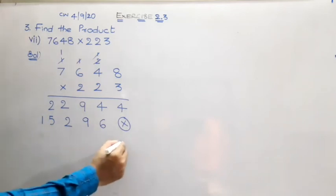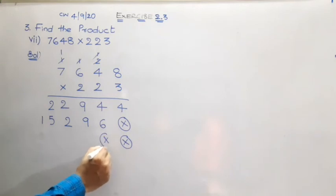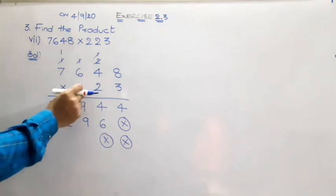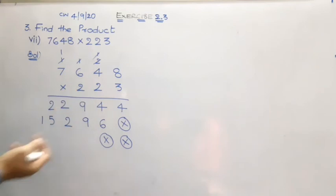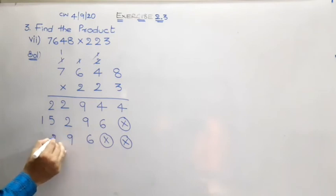For the next number, we again have to leave two place values. Here we have the advantage that again we have to multiply with 2. So the same result is going to appear here: 6, 9, 2, 5, 1.